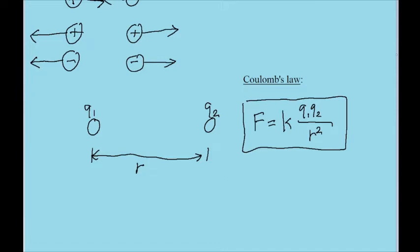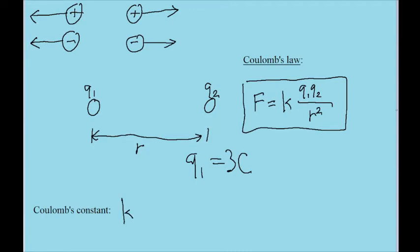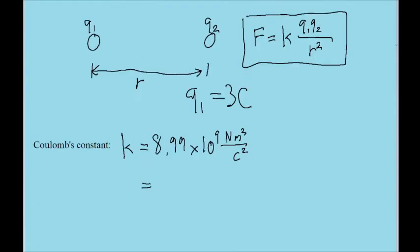So one charged particle, for example, can be said to have a charge of 3 Coulombs, where a capital C is used as the symbol for the unit Coulomb. The K is called Coulomb's constant, and it has a value of approximately 8.99 times 10 to the ninth power, with units of Newton meter squared per Coulomb squared.